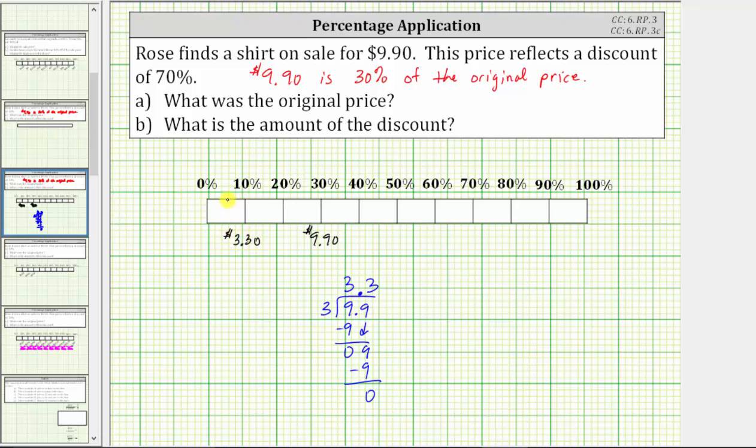Which means each time the percent increases by 10%, we add $3.30. $3.30 plus $3.30 is $6.60, which gives us 20% of the original price. If we add $3.30 again, we do get $9.90, which we already know is 30% of the original price. To complete the tape diagram, we now just add $3.30 each time the percent increases by 10%.